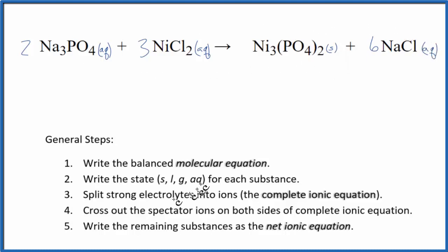So we have our states. Now we can split the strong electrolytes into ions. That'll give us the complete ionic equation, sometimes called the total ionic equation. So sodium is in group 1 on the periodic table, 1 plus.